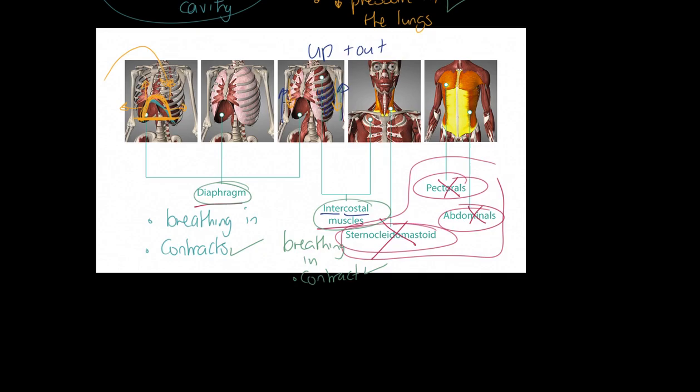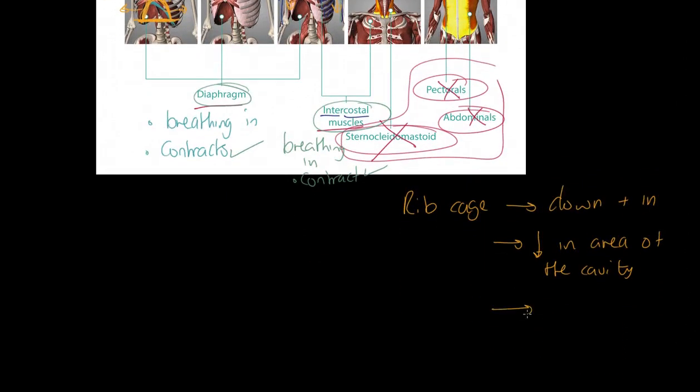Through passive relaxation, the rib cage moves down and in. We therefore get a decrease in area of the thoracic cavity. Because there's less space, we get an increase in pressure, and what happens? Air is pushed or bellowed outwards to the outside world - in other words, we breathe out.